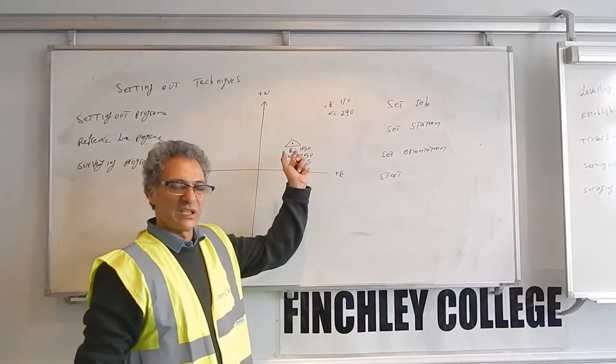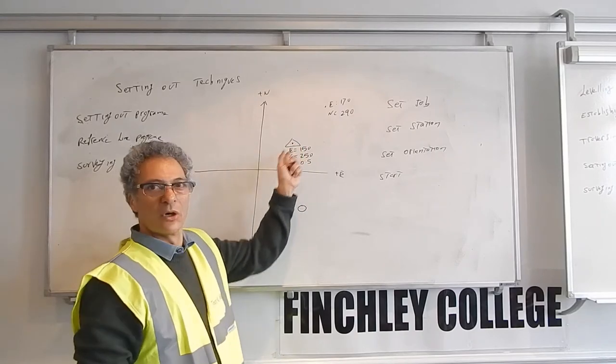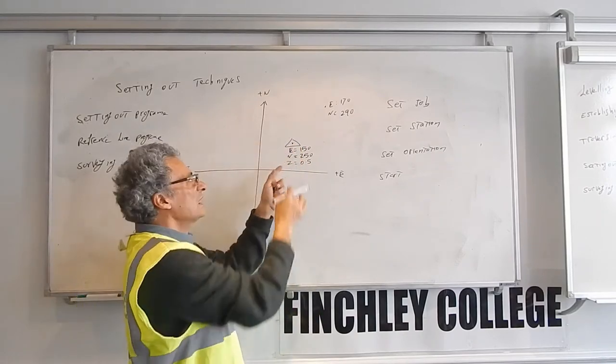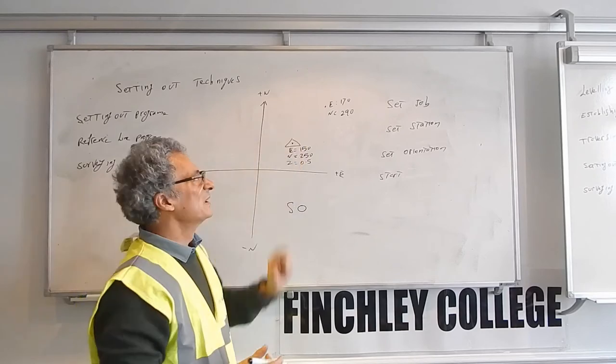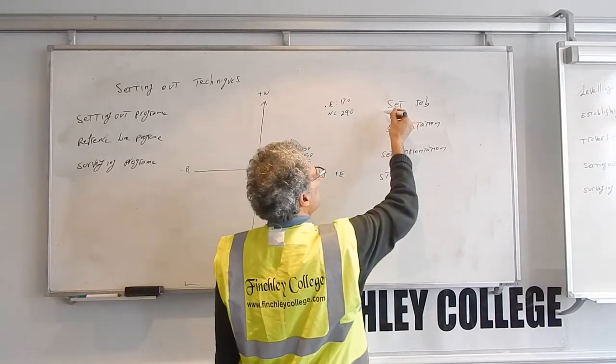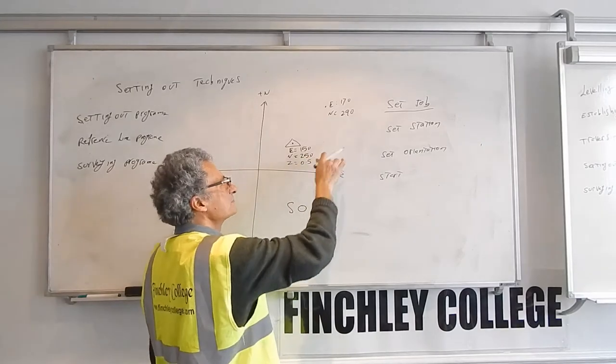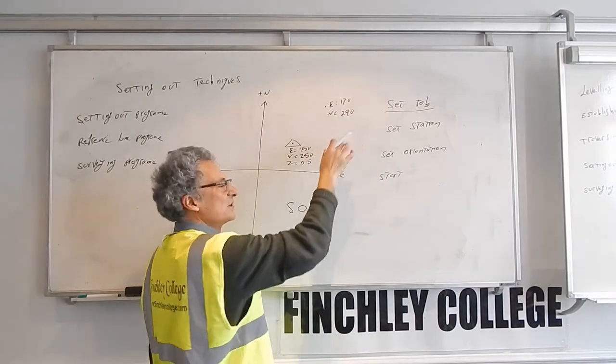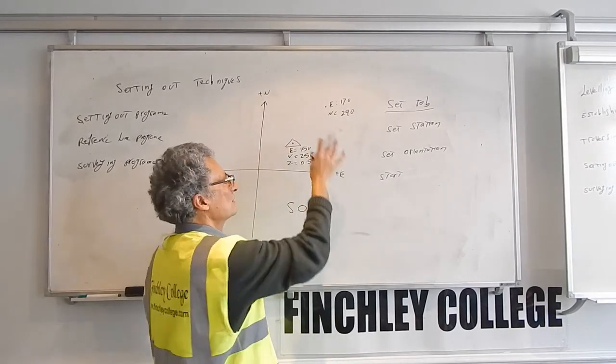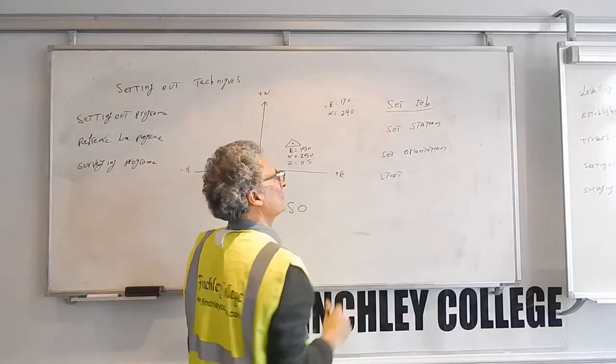Now because you've done a free station program, you're not set up on a known point, you just set up somewhere and used a free station program. The job is set, you've already told what job you want to store data. You go to the job, for example, it's job North London. So everything is stored in the North London job.